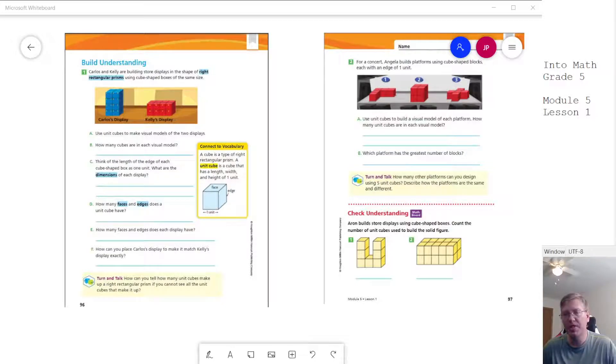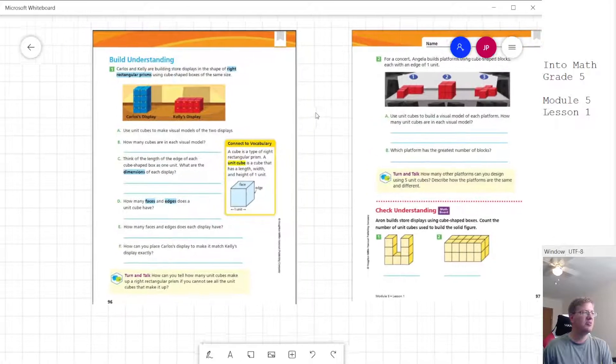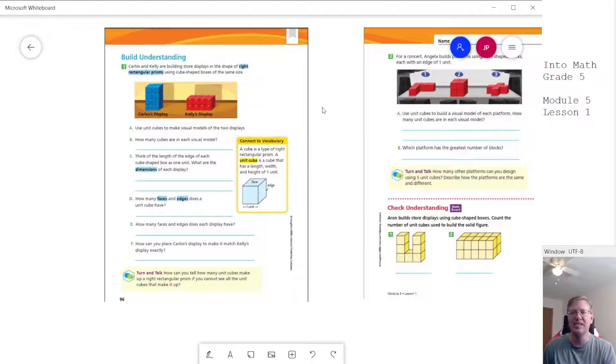In this module, we're going to be working on finding the volume of three-dimensional shapes. And so we are going to be doing some things that should be familiar to us using area squares and like the little centimeter cubes. And we're going to be working to make different shapes and figure out how we can manipulate those and figure out the math problems that go with them. We want to find the volume, which is going to be the length times the width times the height.